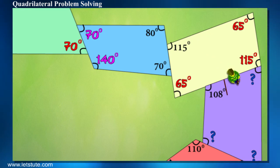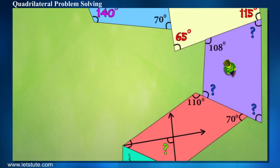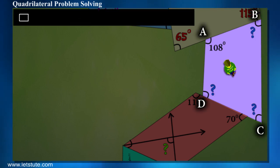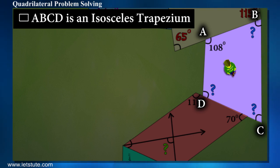Alright then, let's solve along with Jack. Fourth block. Can you find the missing angles of the fourth block? Here's a hint, it's a trapezium. An isosceles trapezium. Is it easy now?